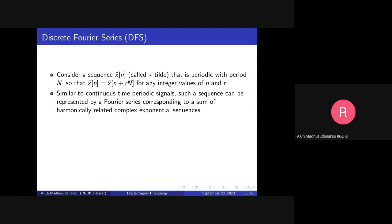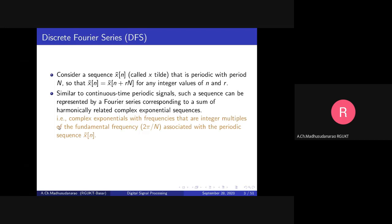Similar to continuous time periodic signals, these periodic sequences can be represented by a Fourier series corresponding to a sum of harmonically related complex exponential sequences. We already know Fourier series for the continuous time case — we represent a periodic signal as a linear combination of harmonic components. In the same manner, we can represent any periodic sequence as a linear combination of harmonically related complex exponential sequences with frequencies that are integer multiples of the fundamental frequency 2π/N, where capital N is the period.